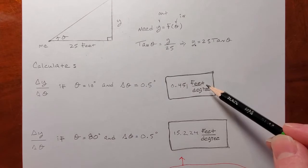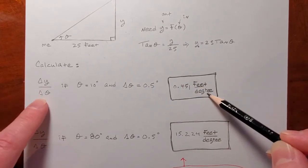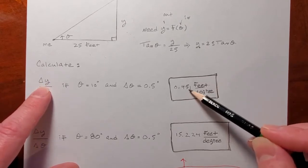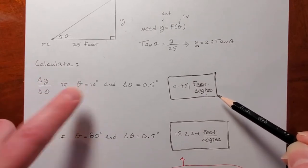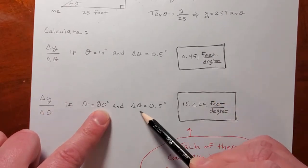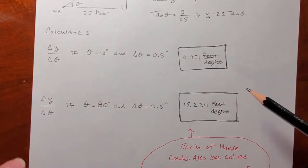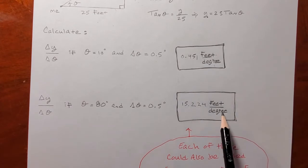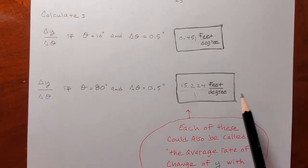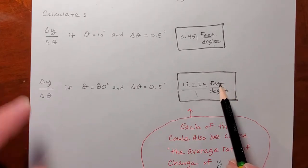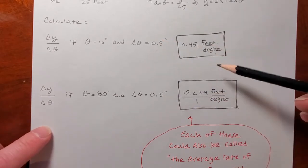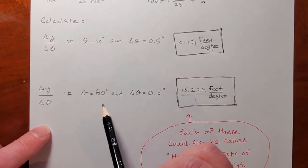Like I told you, I've worked this out already. When theta is small, this is like saying for every one degree change in the angle, y will change by a little less than half a foot if the angle starts off at 10 degrees. And then here, if theta is much bigger, notice the change is the same — it's changing by the same amount either way. But if theta is 80 degrees, a one degree change in the angle will cause y to jump by a little over 15 feet.